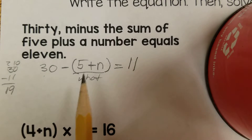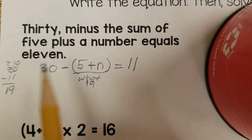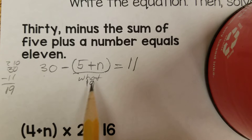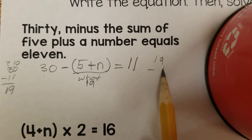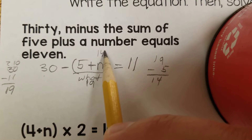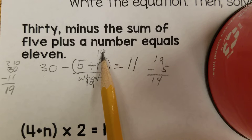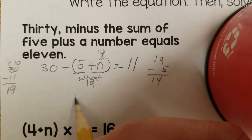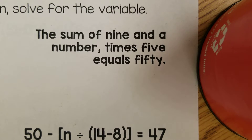That means this total has to be 19. So 5 plus what equals 19? To find that, I take 19 minus 5 and get 14. So n equals 14. Check: 5 plus 14 is 19, and 30 minus 19 is 11. So n equals 14.